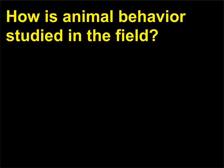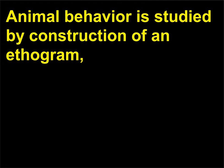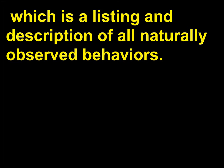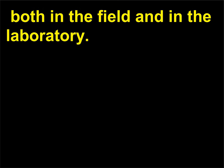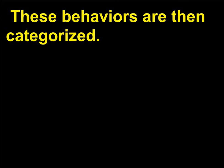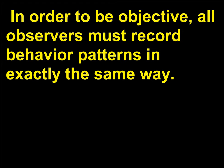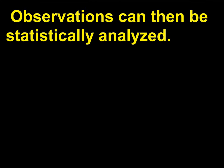How is animal behavior studied in the field? Animal behavior is studied by construction of an ethogram, which is a listing and description of all naturally observed behaviors. Behavior can also be studied through manipulative investigations, both in the field and in the laboratory. These behaviors are then categorized; to be objective, all observers must record behavior patterns in exactly the same way. Observations can then be statistically analyzed.